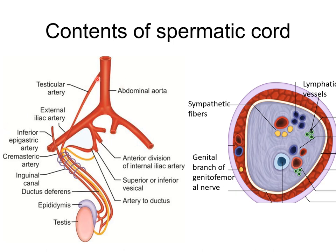The Spermatic Cord contains mainly three arteries. The first is the testicular artery, a branch from the abdominal aorta. The second is the cremasteric artery, from the inferior epigastric artery. The third is the artery to the ductus deferens, derived from the inferior vesical artery. All arteries are accompanied by their corresponding veins. The lymphatics from the testis drain into the pre- and para-aortic nodes, while those from the coverings drain into the external iliac nodes. The nerves include the genital branch of the genitofemoral nerve, supplying the cremasteric muscle loops, and sympathetic fibers accompanying the arteries.